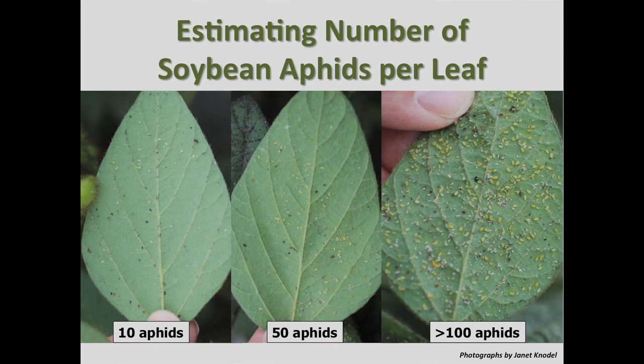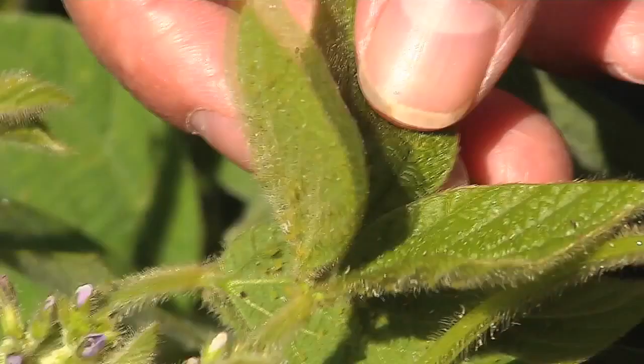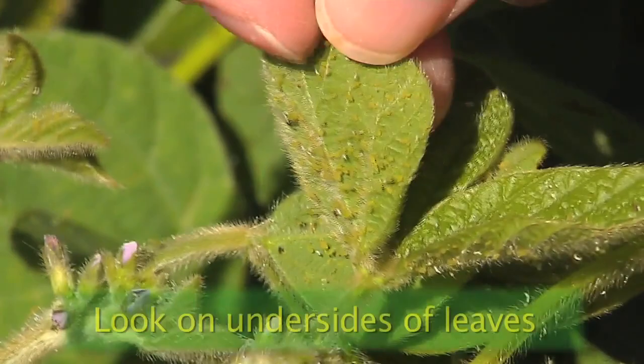Moving up the plant as you're sampling — aphids are often concentrated on the upper leaves of the plant.